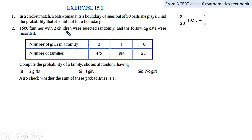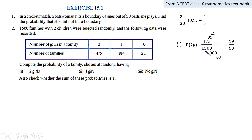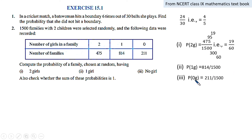Second exercise: 1500 families with two children were selected randomly and data were recorded. Number of families with two girls: 475; one girl: 814; zero girls: 211. Adding all gives 1500. The probability of a family chosen at random having two girls is 475 by 1500. Simplifying by dividing by 5 gives 95 by 300, and again by 5 gives 19 by 60. Probability of one girl is 814 by 1500, and zero girls is 211 by 1500.